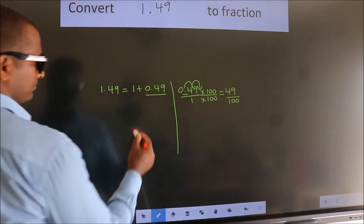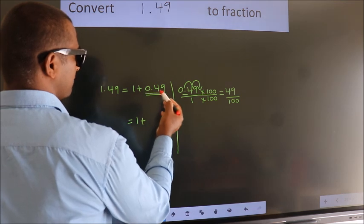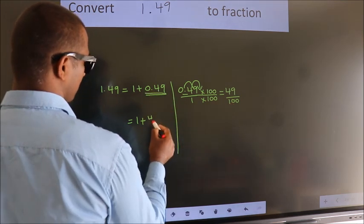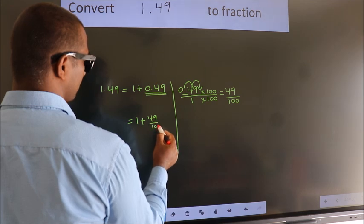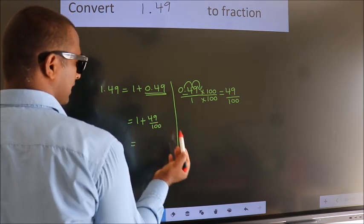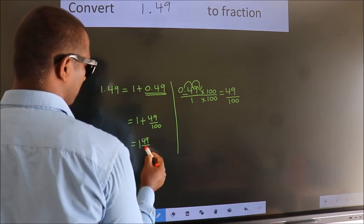Now here, 1 plus in place of 0.49 I write this: 49 over 100. So 1 plus 49 by 100. In mixed fraction it is 1 and 49 over 100.